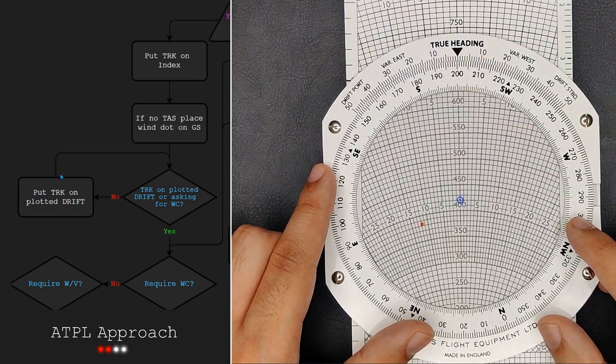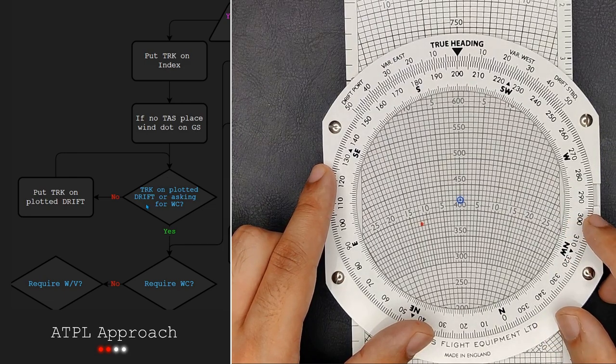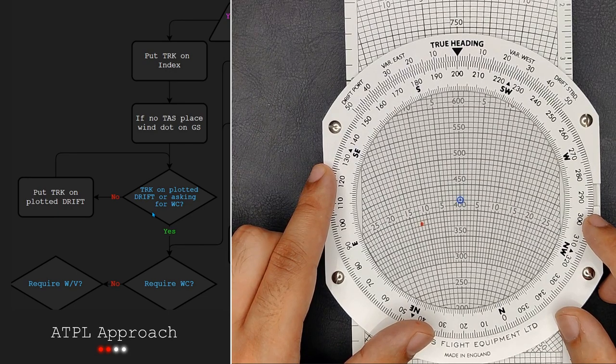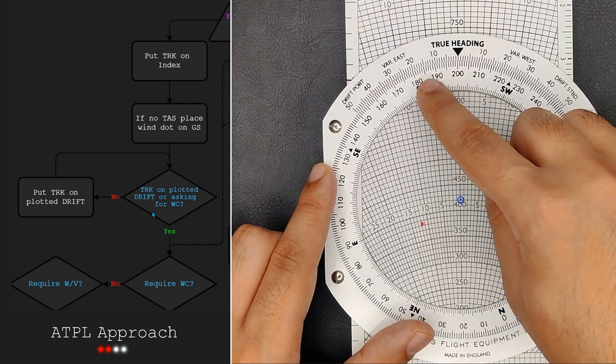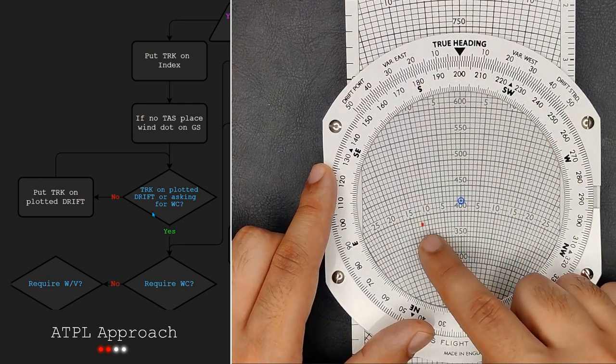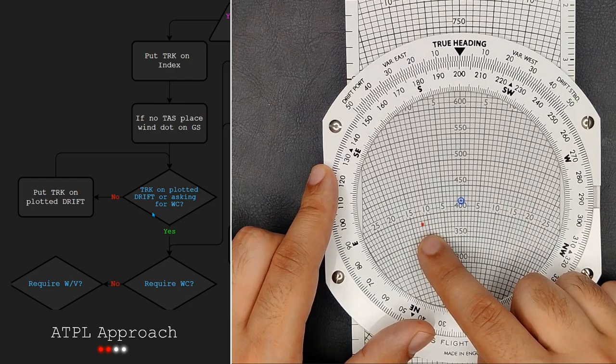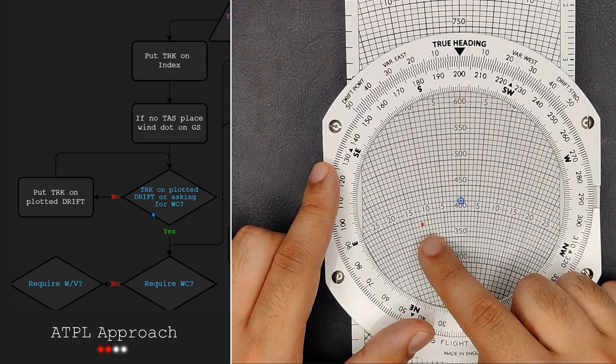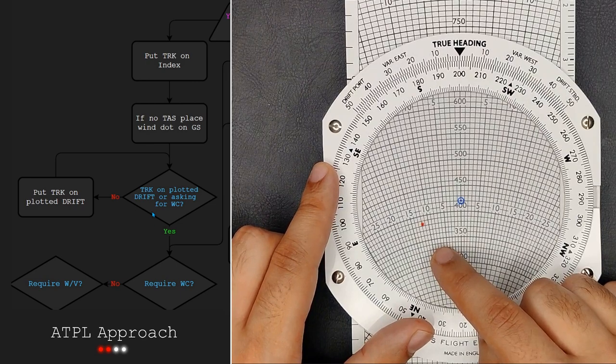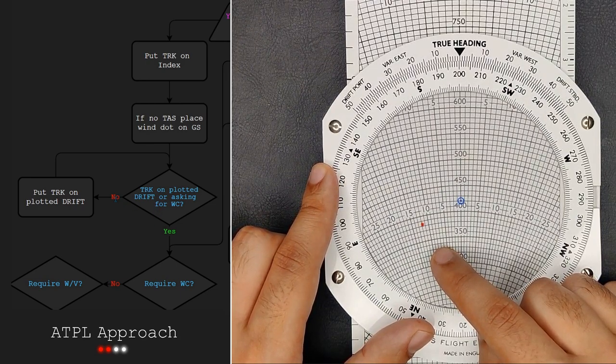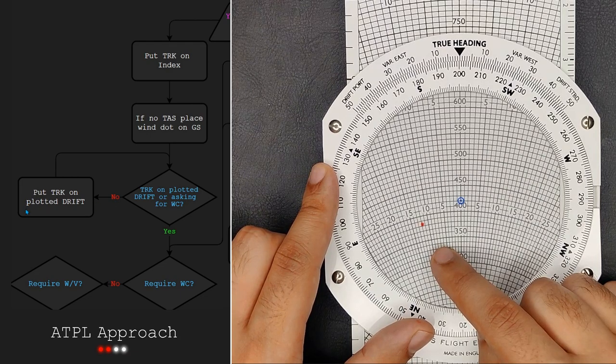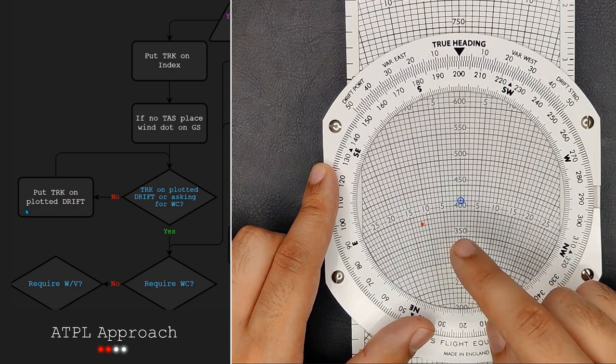We follow the line back to this decision and then check again. Is the track on the plotted drift? We had our track of 188 degrees lined up with 12.5. However the wind dot is now saying 12 degrees. We are close and this is probably good enough but let's do it once more for practice. So what we do is do this process again. We put our track of 188 degrees on what the plotted drift is saying.